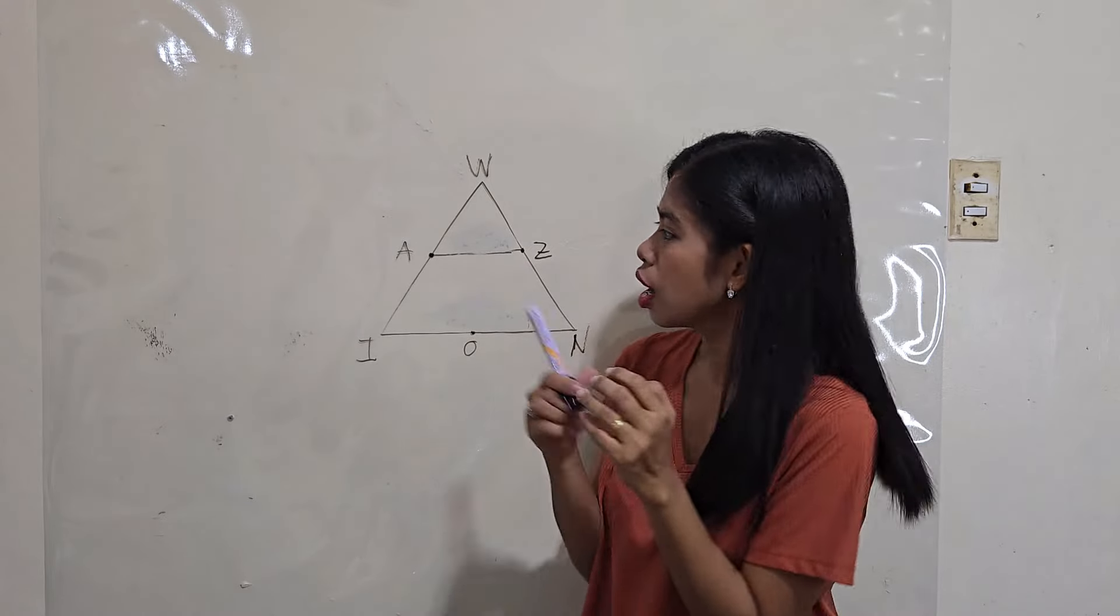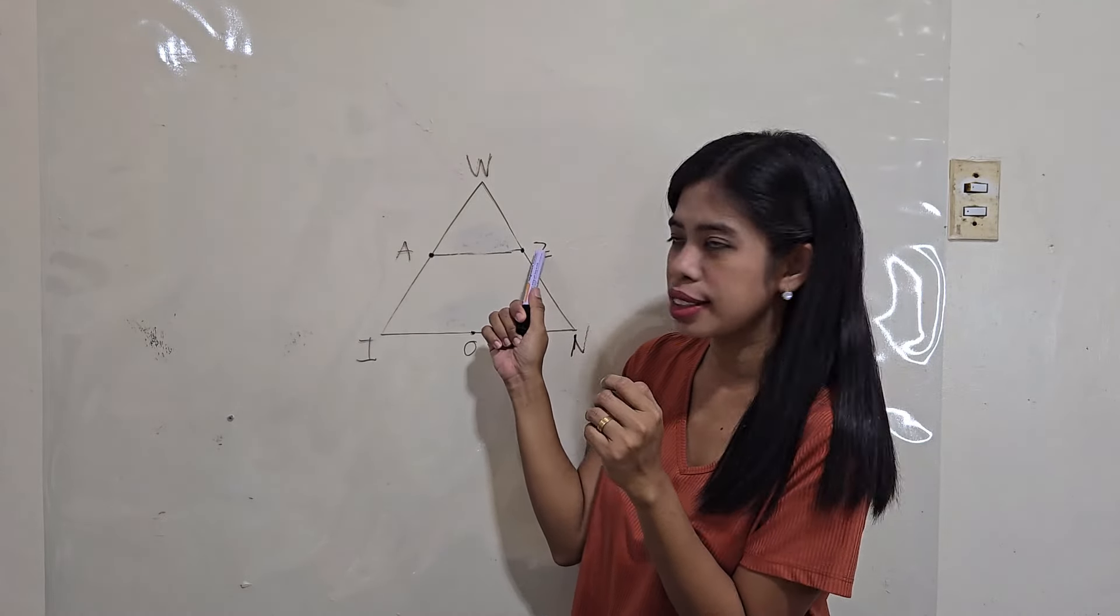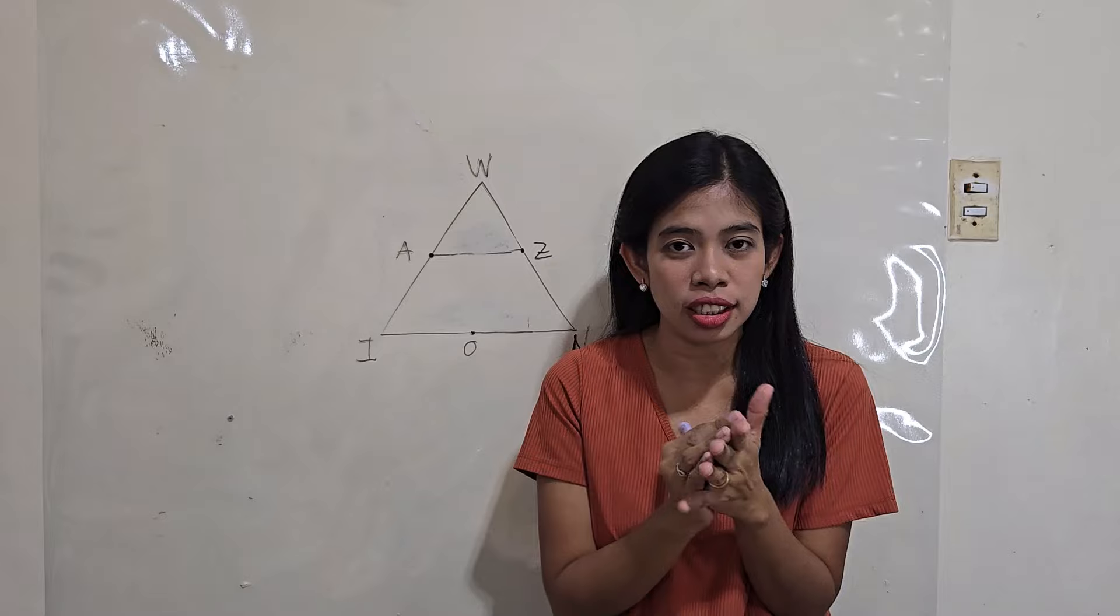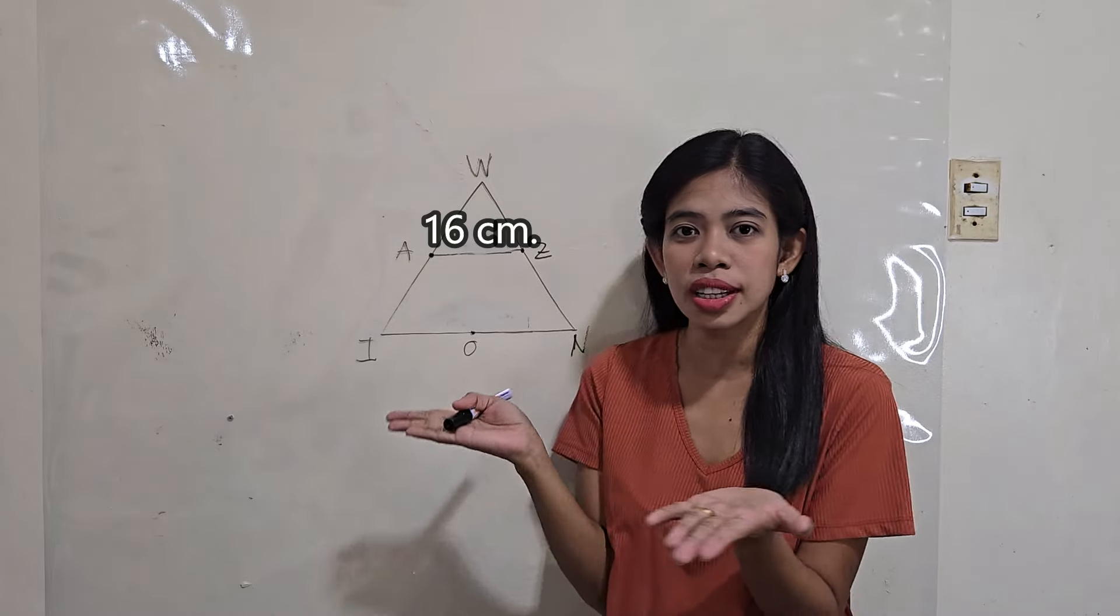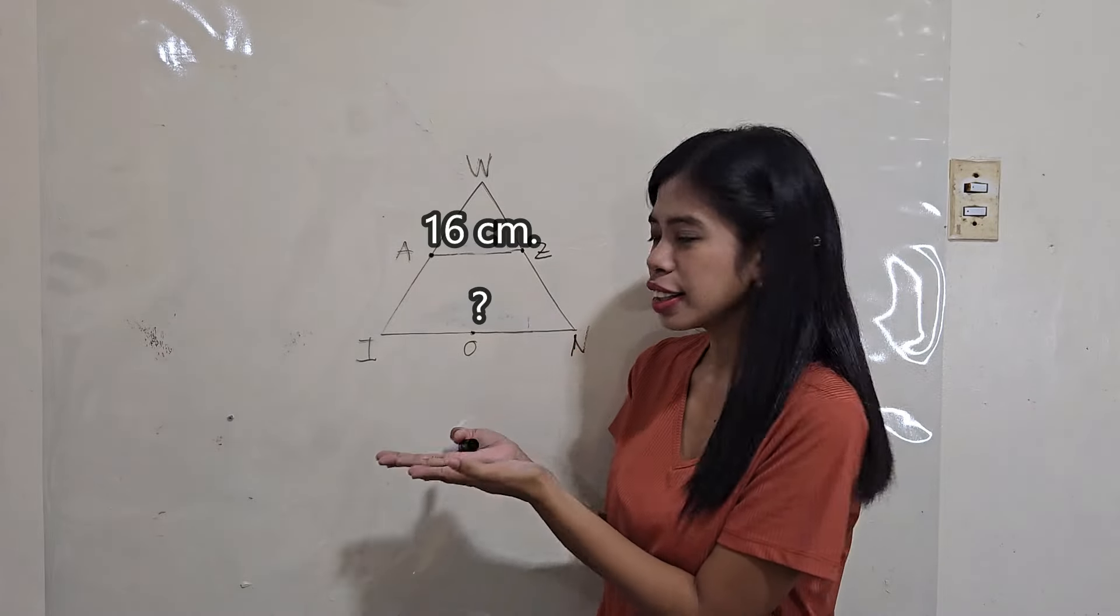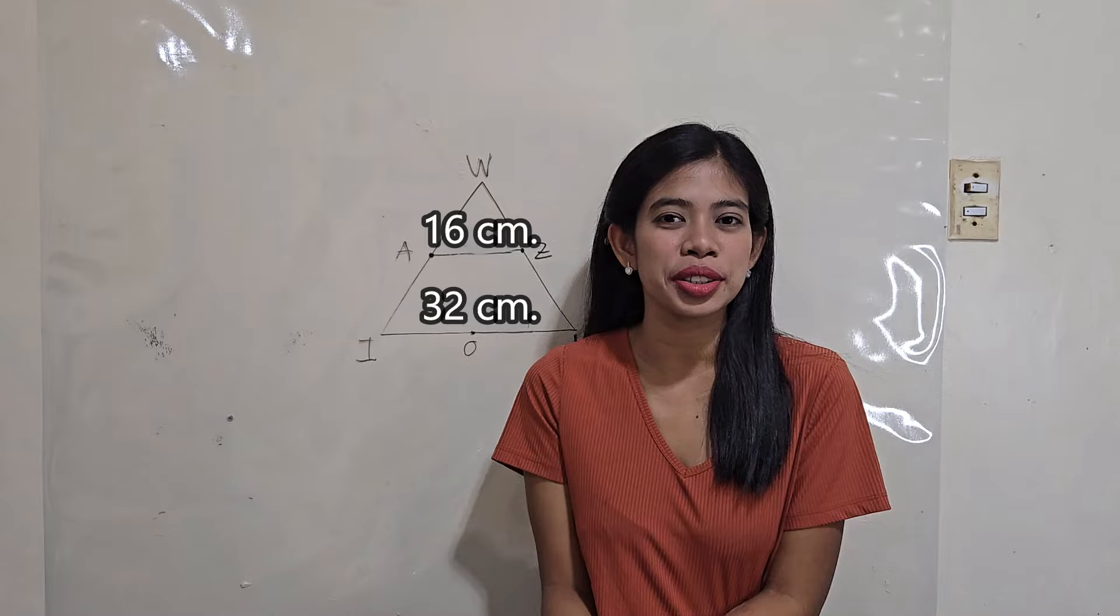So, suppose the measure of the segment AZ or the midline AZ is 16 centimeters. What's the measure of the third side? Ta-da! That's it. 32 centimeters. Very good.